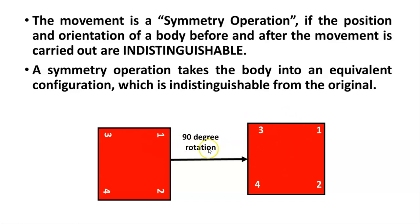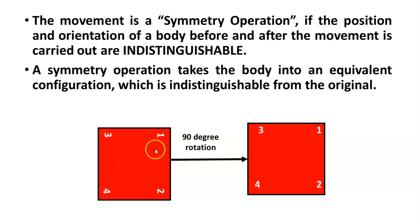If I carry out this 90-degree rotation three more times in a row, we get a 360-degree rotation, and you can see that the square will return back to the original position — this is called the identical position.